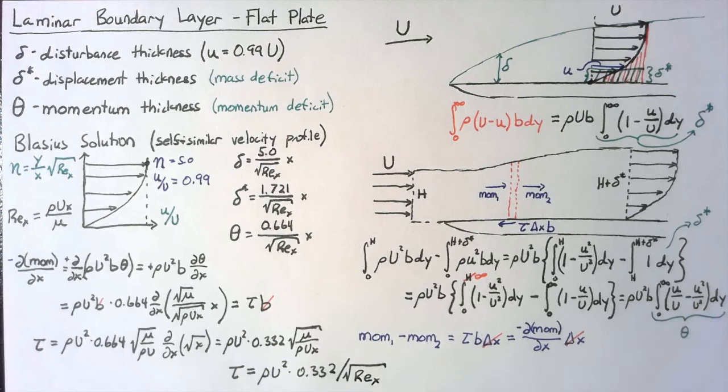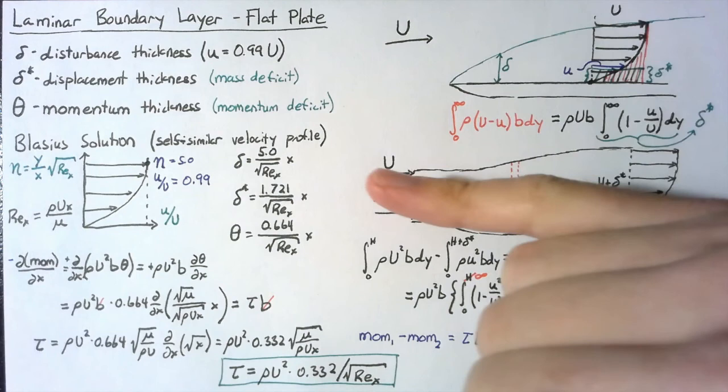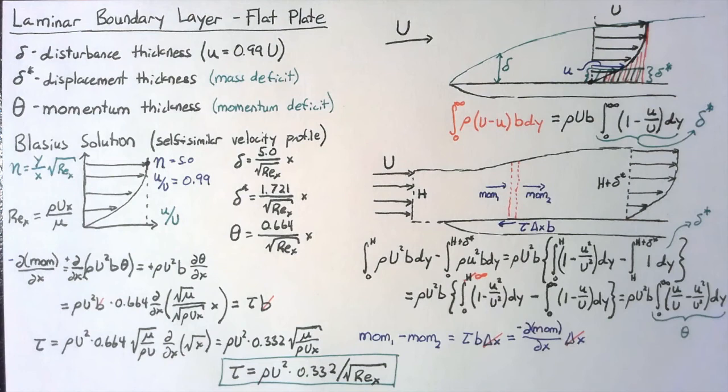And this is our final result from this section. If we have the shear stress, we can integrate along the surface in order to get the total drag. But for right now, we've taken this definition of the momentum thickness and the Blasius solution for the momentum thickness and arrived at a value for the shear stress, which was our goal for this video.